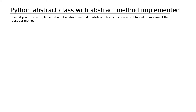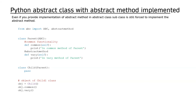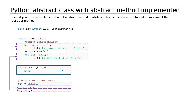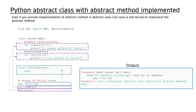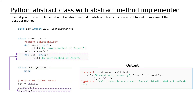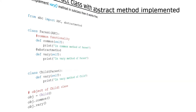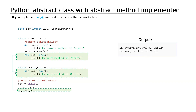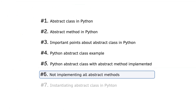Even if you provide an implementation of an abstract method in the abstract class, the subclass is still forced to implement the abstract method. If you implement the vary method in the subclass then it works fine.